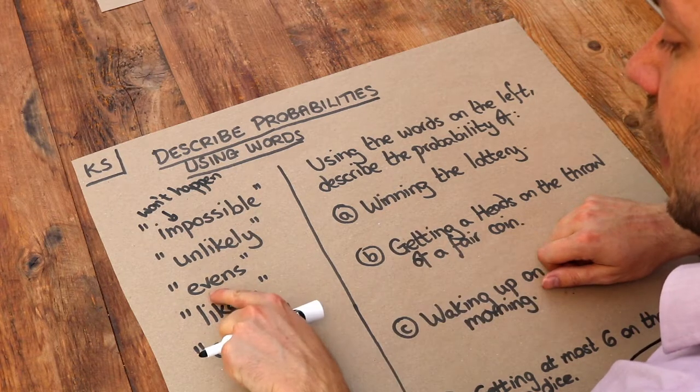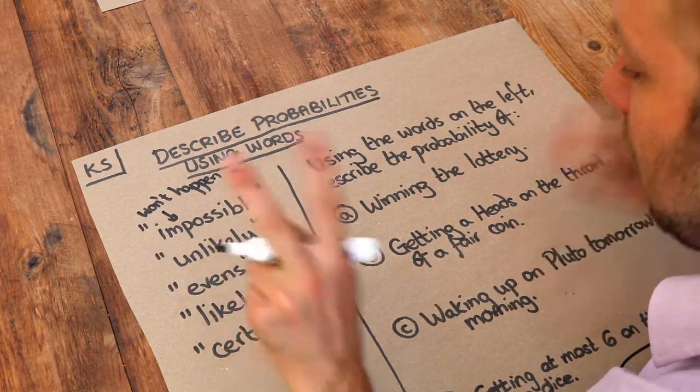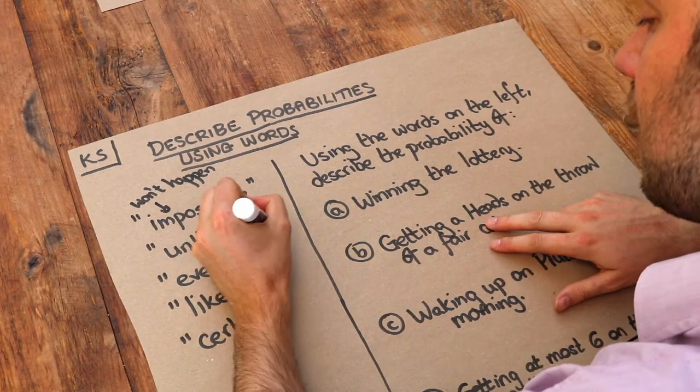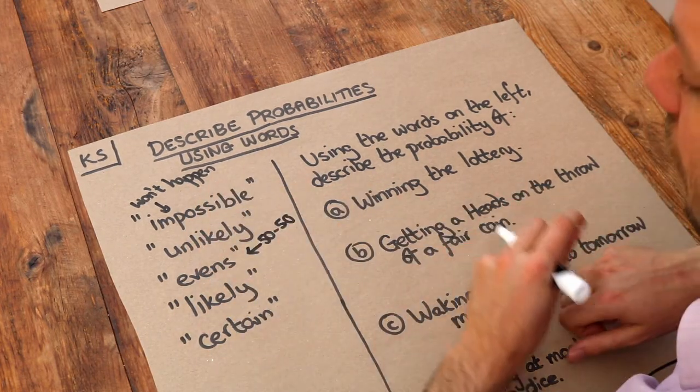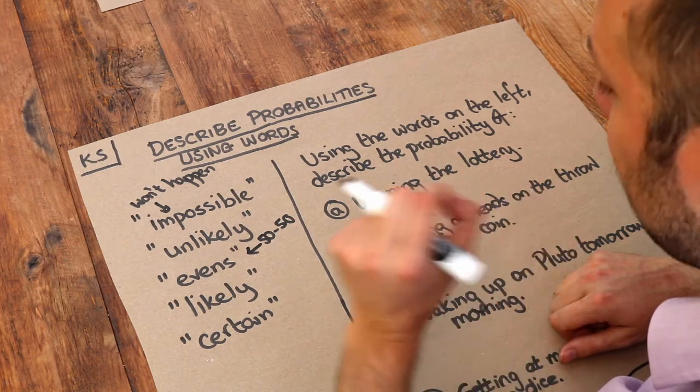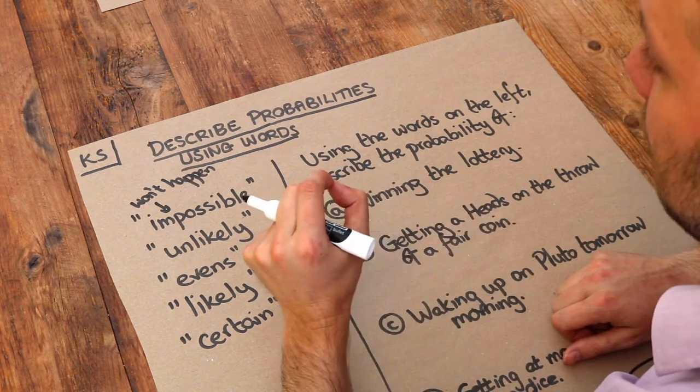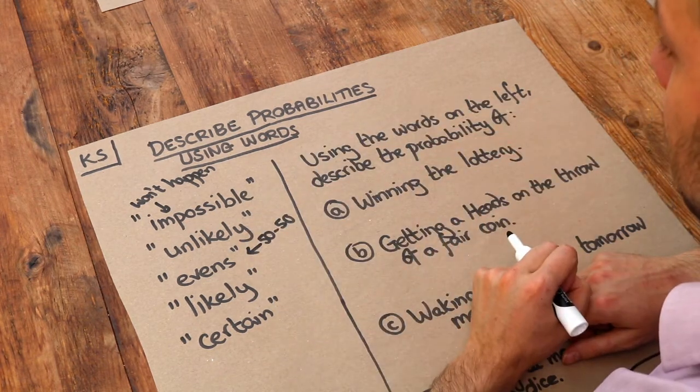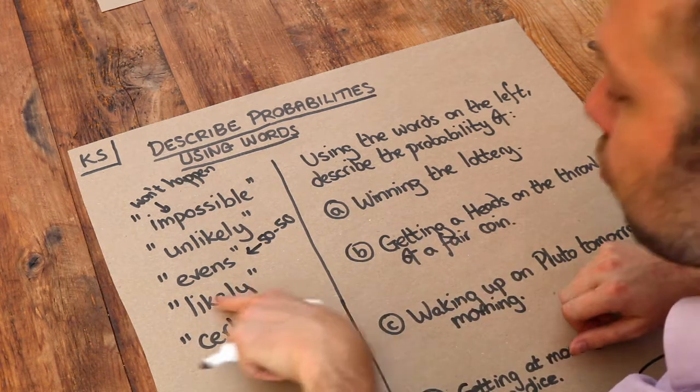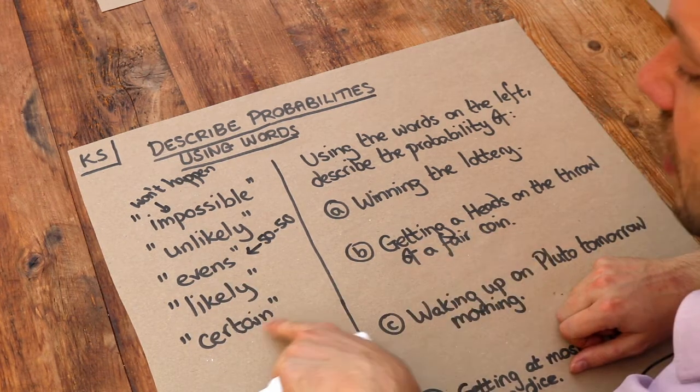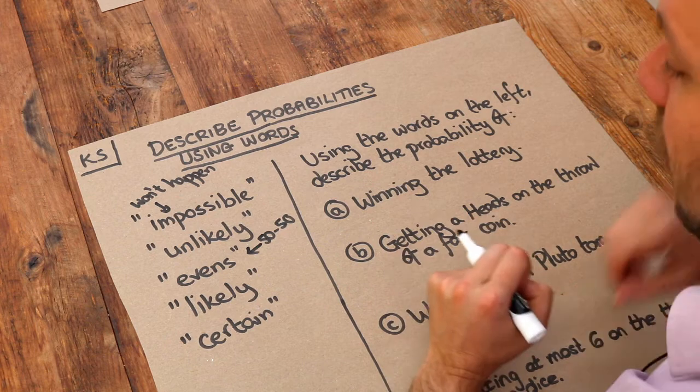If something has even chance, or we say evens, then there's a 50-50 chance of it happening, and by 50-50 I mean that it's equally likely to happen as it is to not happen. Likely means it's probably going to happen, and certain means it's absolutely going to happen.